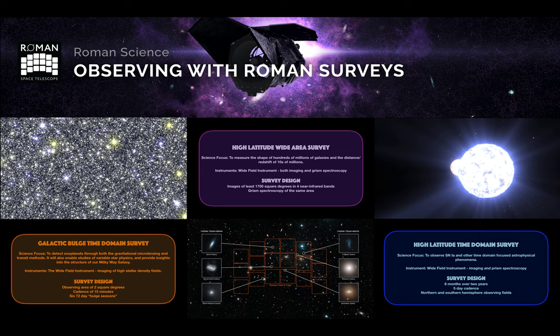The spectroscopic component of the High Latitude Wide Area Survey measures red shifts of tens of millions of galaxies using grism spectroscopy, again with the wide-field instrument over the same area as that for the imaging.